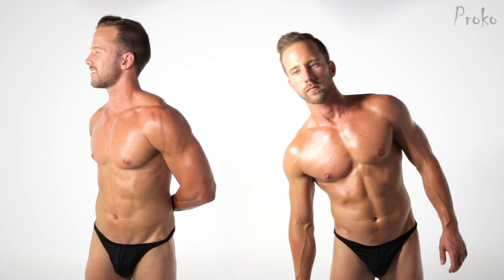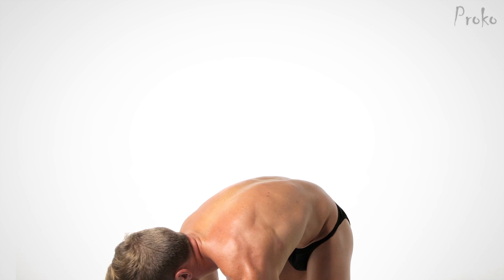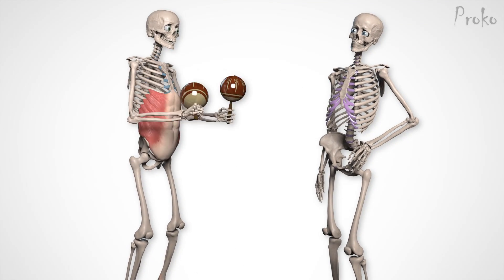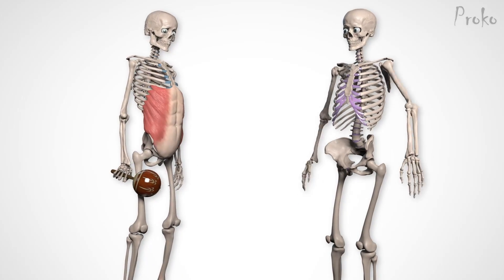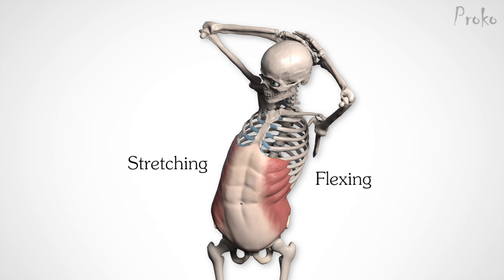The function of the oblique is to bend the spine laterally and to twist it. When both sides work together, they flex the torso forward. Sometimes the external oblique is its own antagonist — when one side flexes, the other side stretches, and vice versa.